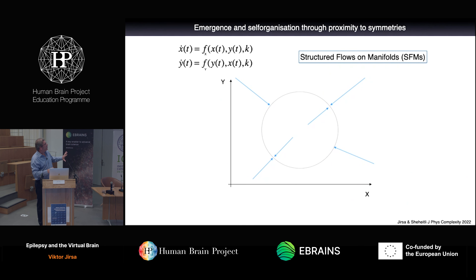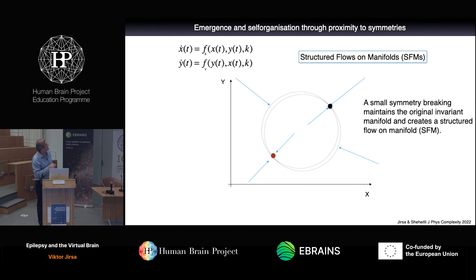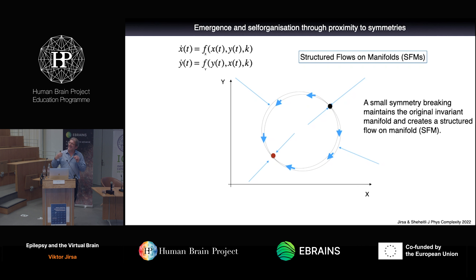Let me show you the principle one more time. One node, second node. Now it's all-to-all coupled under full symmetry. Then I break the symmetry a little bit, and the nullclines — where x-dot equals zero and y-dot equals zero intersect — I generate fixed points all the time. This is very generic behavior under the symmetry. And depending on how I break the symmetry, I can generate arbitrary dynamics limited on this manifold.